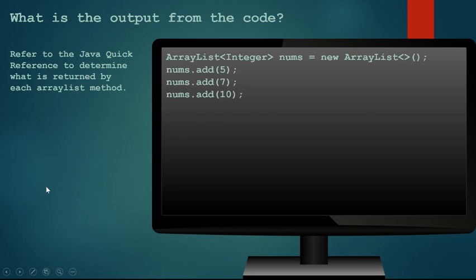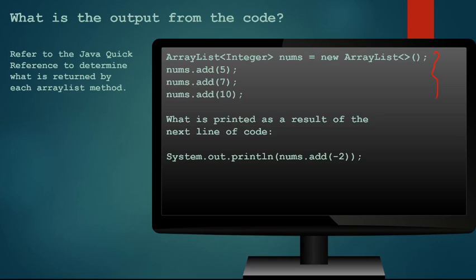So here I have a little bit of code set up with an integer ArrayList, it's called nums and it's instantiated using the default ArrayList constructor. We're adding the elements 5, 7, and 10 so they're going to have the index values of 0, 1, and 2. And we see we have this question what is printed as a result of the next line of code. Well system out print nums dot add negative 2. Remember add with one parameter always returns true so this is going to print true.